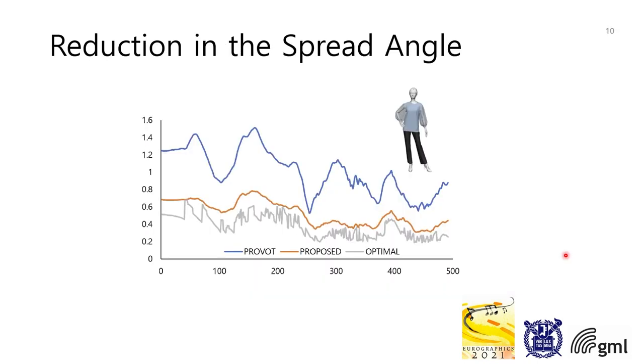Let's see the reduction in spread angle of cones. We selected an arbitrary node somewhere in the middle of the hierarchy and plotted the spread angle of the normal cone of that node while simulating the hanbok girl. Blue is from the previous method and orange is from the proposed method. We can see that the difference is conspicuous.